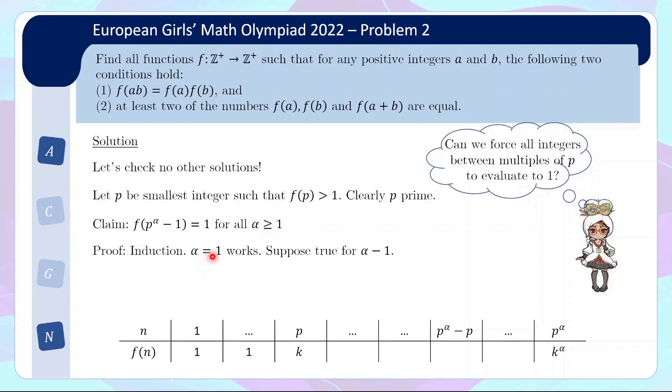The base case alpha equals 1 works because it's just p minus 1, and by assumption, p minus 1 evaluates to 1. So suppose the hypothesis is true for alpha minus 1, and we want to show that it's true for alpha. Well, the clever thing about this, the very elegant thing is, when it's true for alpha minus 1, we actually know how to figure out the value of this multiple of p here. Indeed, this multiple of p here, you can pull out the factor of p, and then you are left with p to the alpha minus 1 minus 1.